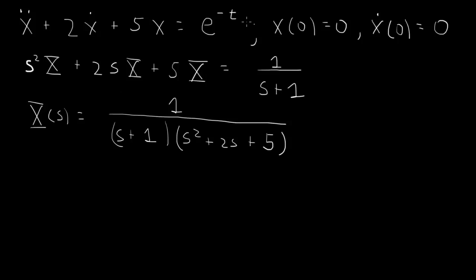We know that the solution should involve exponential functions from the particular solution and the homogeneous terms. The characteristic equation is s-squared plus 2s plus 5 equals 0. This cannot be factored over the reals — it has complex conjugate roots, so we expect exponential times sine and exponential times cosine. There are two algebraic steps needed: first, break up the denominator into linear and possibly quadratic pieces using partial fraction decomposition.